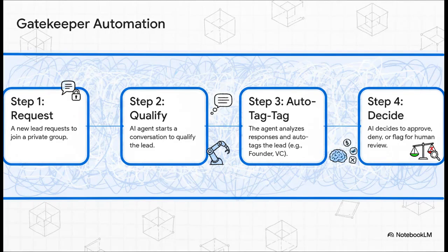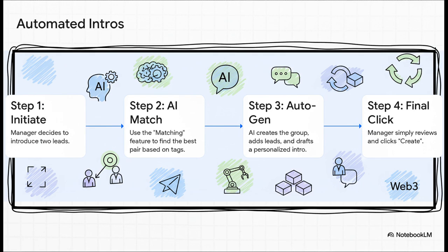So take their gatekeeper feature. Instead of a manager having to manually approve every single person who wants to join a private group, an AI agent just takes over. It starts a conversation, it asks qualifying questions, it analyzes the answers, and even auto-tags the person as a founder or a VC, and then it decides whether to approve them, deny them, or flag them for you to look at. The whole process is handled automatically. Or how about making introductions? Another super tedious task that's now automated. The system helps you find the perfect two people to connect based on their profiles, and then it does all the heavy lifting — it creates the group, it adds the contacts, and it even drafts a personalized intro message. Your only job is to give it a quick look and click create.